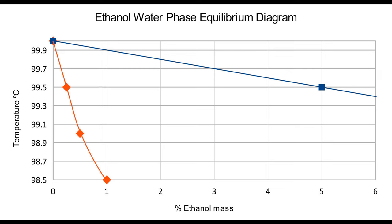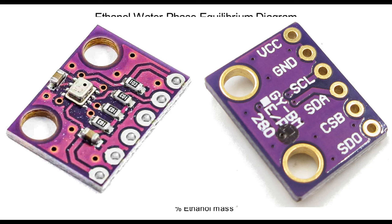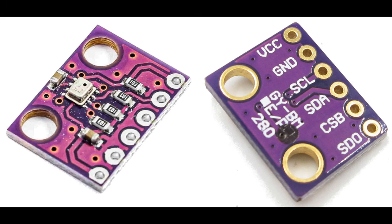The instrument is inexpensive and easy to use — it's a BMP280, a digital atmospheric temperature and pressure sensor chip made by Bosch. It can be bought as a breakout board for around $1.50, and is used with a controller such as an Arduino or Raspberry Pi. It can communicate via either the SPI or the I2C protocol. SPI is a communication system that has a clock, two data lines and a chip select line, so that each SPI device must have its own chip select line.